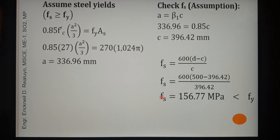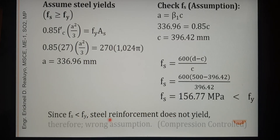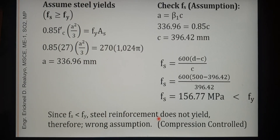Comparing this FS of 156.77 to FY of 270 MPa, FS is much less than FY. Therefore the steel reinforcement does not yield — wrong assumption. As discussed in the flexural strength video, when FS is less than FY the condition of the beam is compression controlled.